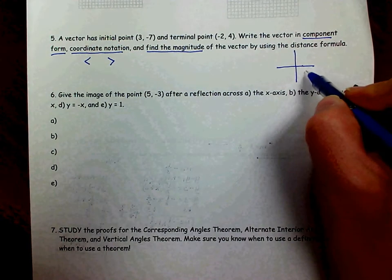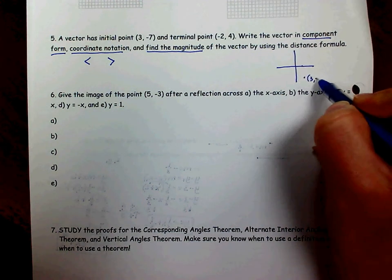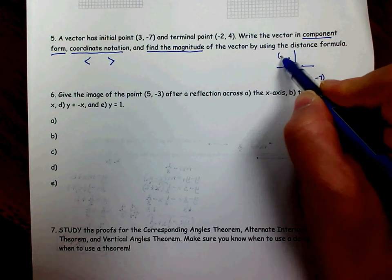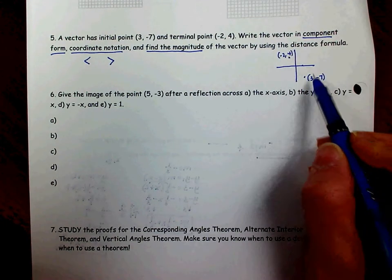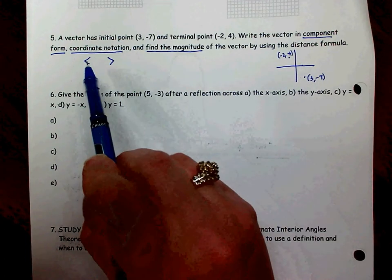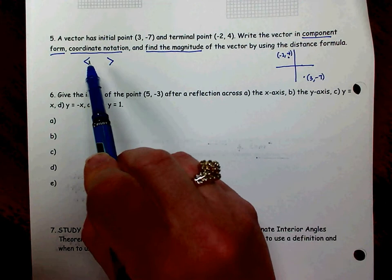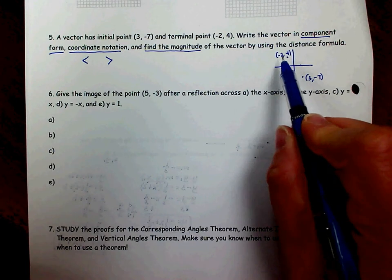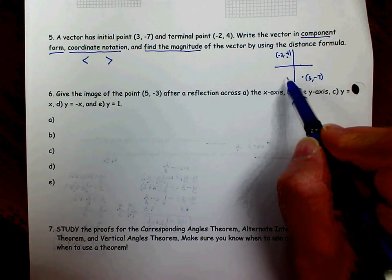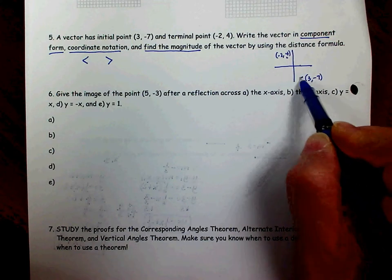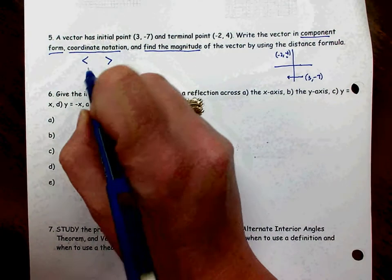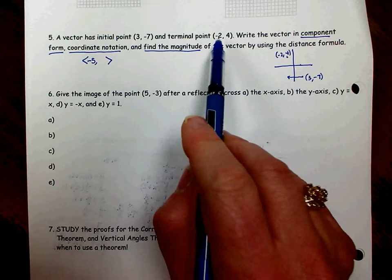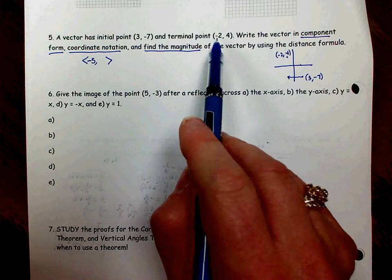So if you picture that point (3, -7) is where you are starting and the point (-2, 4) is where you're ending up, the x coordinates are what tell you left or right in movement and that movement is what goes in the first spot of our component form. So we're starting at a positive 3 on the x. We're ending at a negative 2. So we have to go to the left 5 units in order to do that movement. So left 5 makes this first number in component form a negative 5. So 3 to -2 on the x goes to the left 5 units.